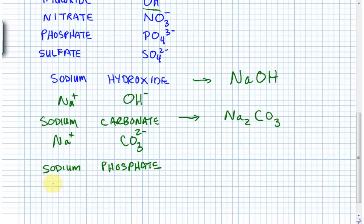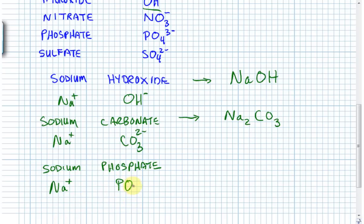Now sodium phosphate. Sodium is always plus 1. Phosphate, from memory, is PO₄³⁻ — minus 3. We need the simplest way to combine plus 1 and minus 3. We need three sodiums, each with plus 1, to give a total charge of plus 3 to balance the minus 3 on the phosphate. The formula for sodium phosphate is Na₃PO₄.